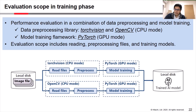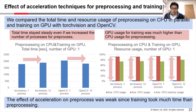We compared the total time and resource usage of preprocessing on CPU in parallel and training on GPU with TorchVision and OpenCV. Please look at the left figure. It indicates the total time of preprocessing on CPU and training on GPU. Please note that the number of GPUs is 1. As you can see, total time stayed steady even if we increased the number of processes from 1 to 12.